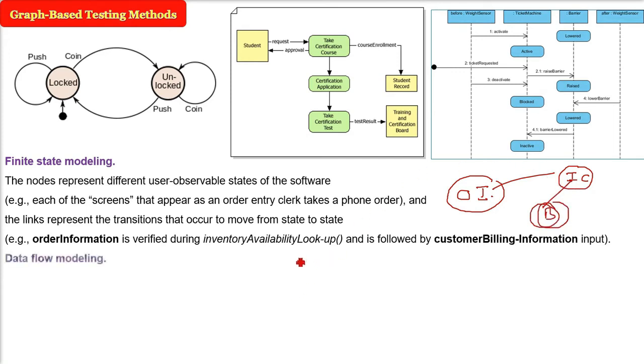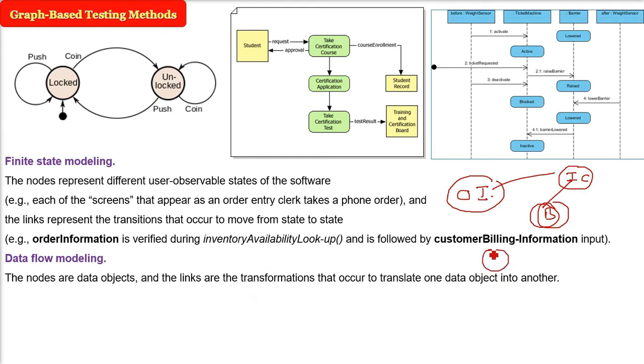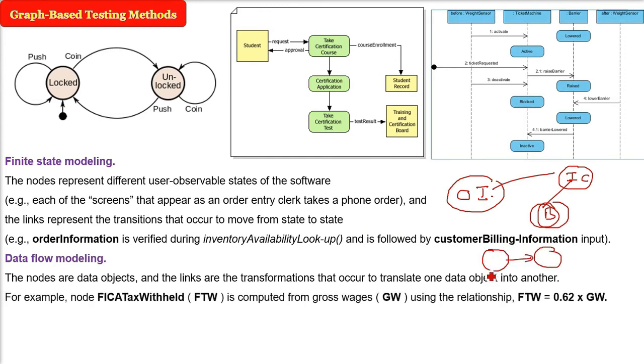We can also use the data flow modeling. And data flow modeling. The nodes can be here data objects. And the links are the transformation that occurred to translate one data object into another. For example, say some tax computation problem is there.